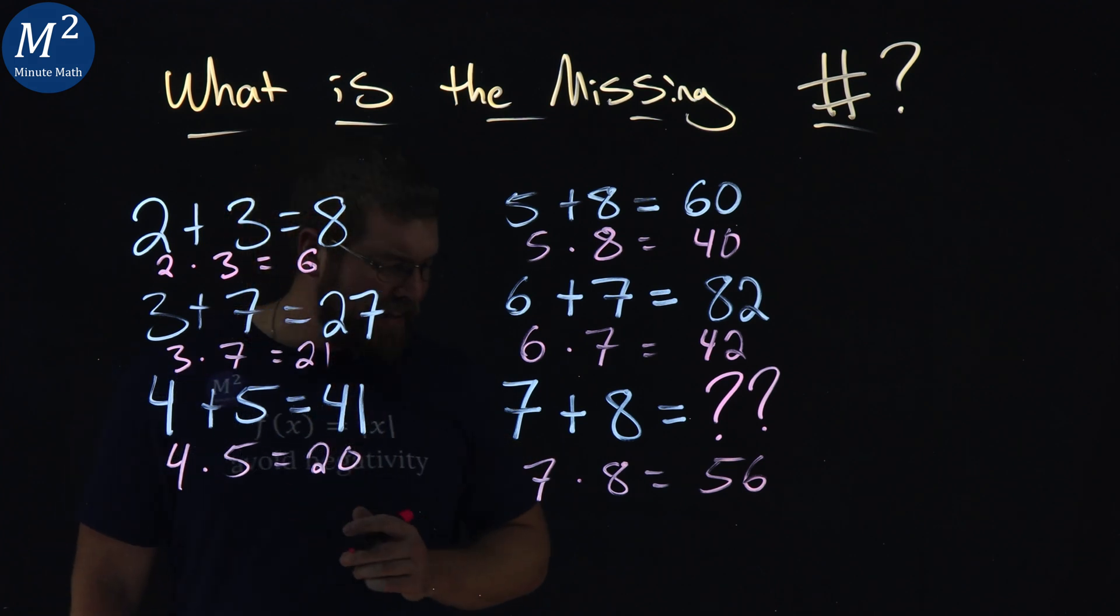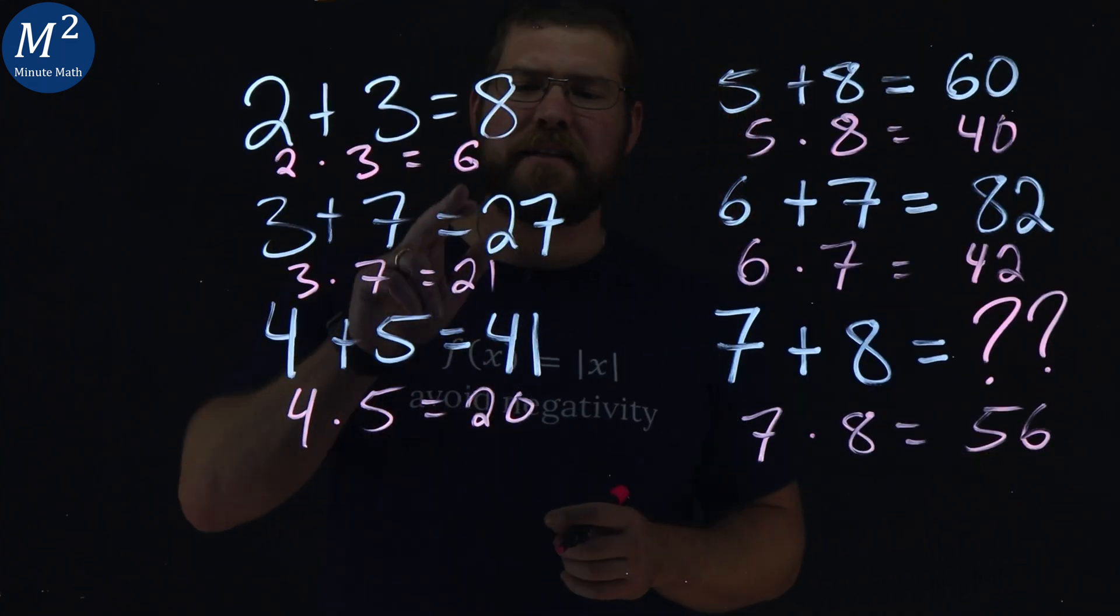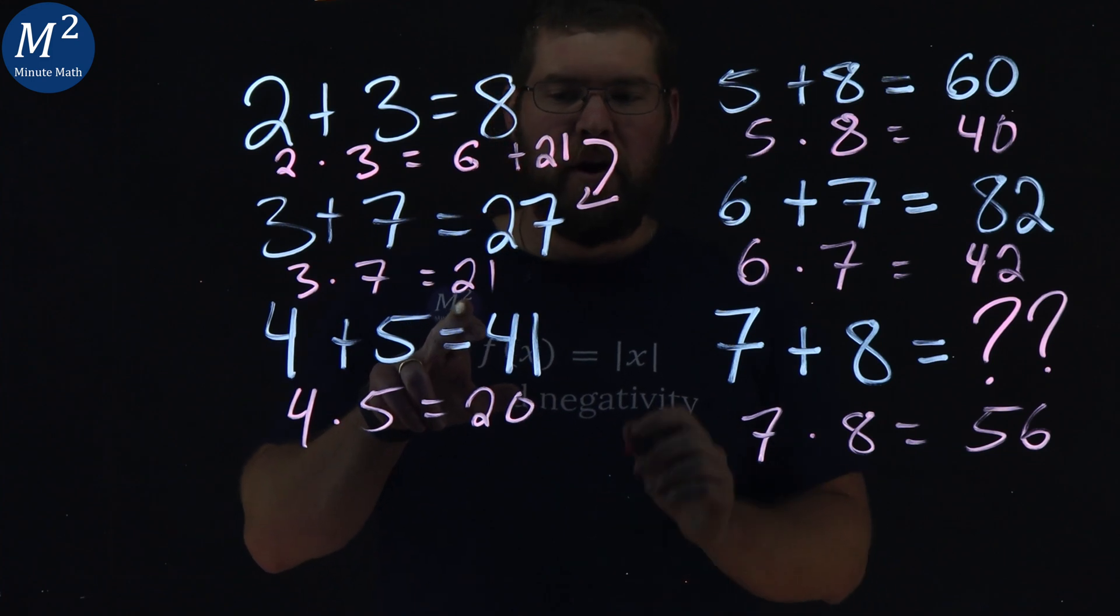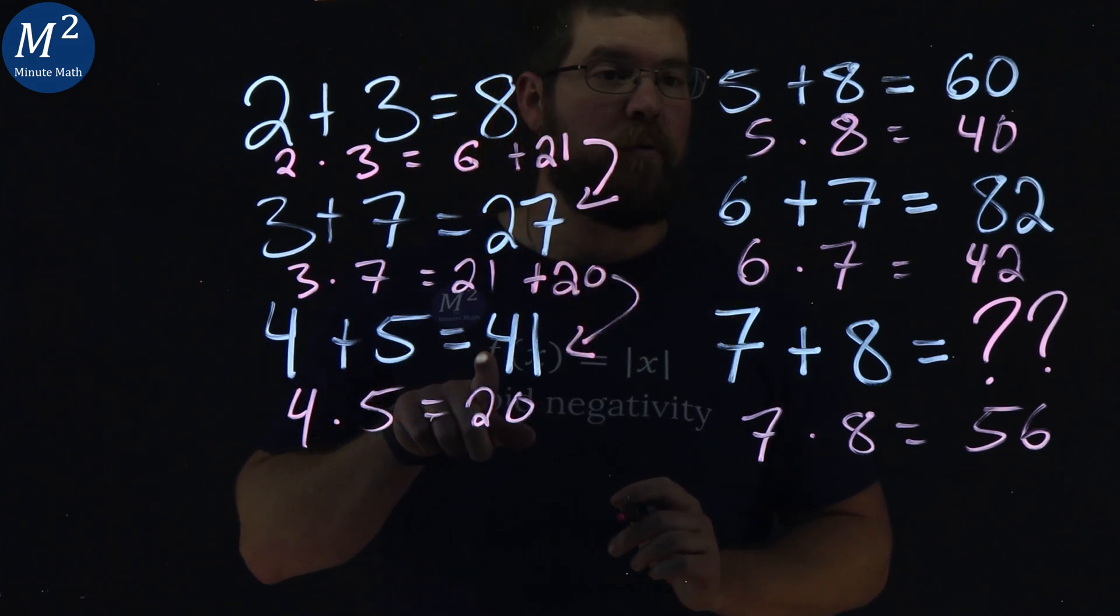Now with that, we find a little pattern. What's 6 plus 21? That gives me 27. What's 21 plus 20? Gives me 41.